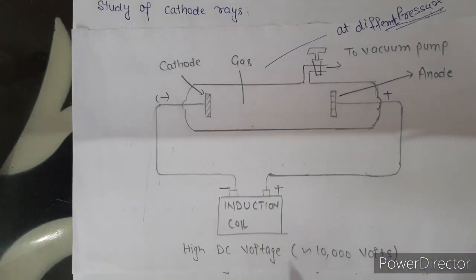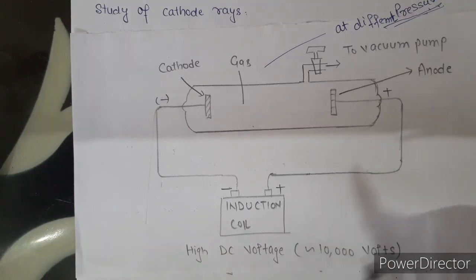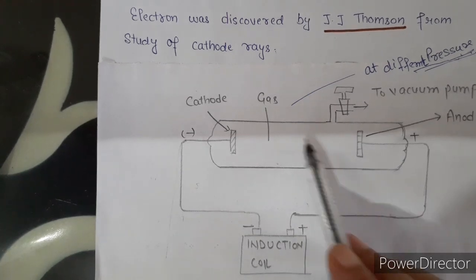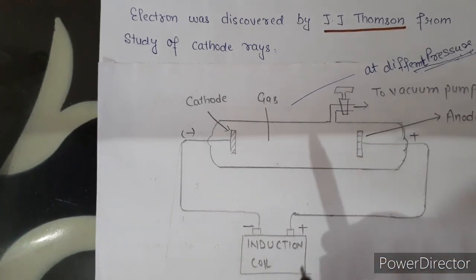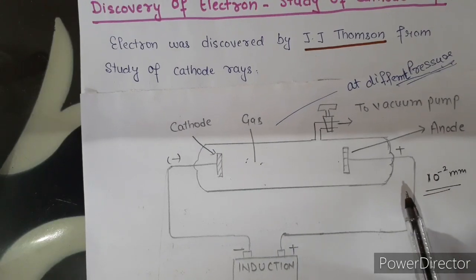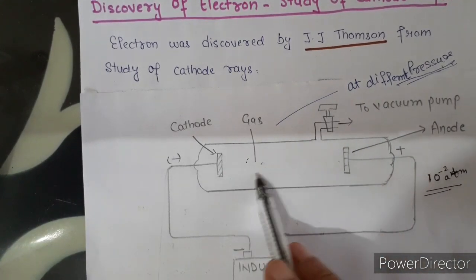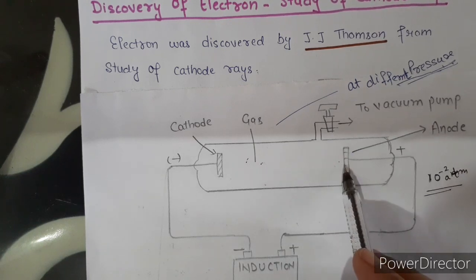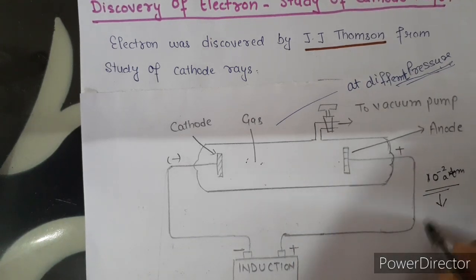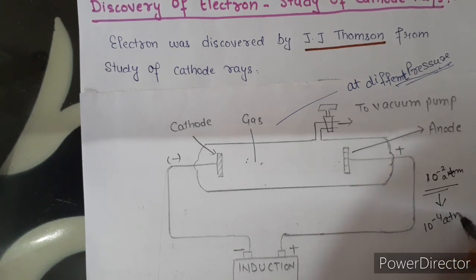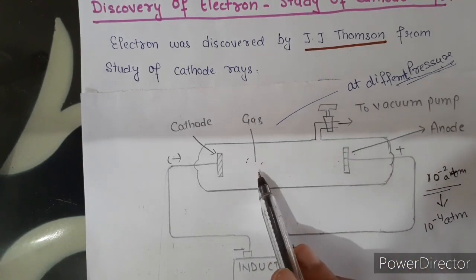When a high voltage of around 10,000 volts is applied between the electrodes, many results were observed at different pressures. When the pressure inside the gas tube is around 1 atm, no current flows between the electrodes — meaning gases are very poor conductors of electricity. When the pressure is reduced to about 10 to the power minus 2 atm, current starts flowing between the electrodes. When pressure is further reduced, the glow between the electrodes disappears but the current continues to flow.